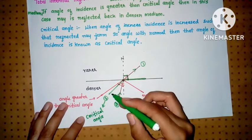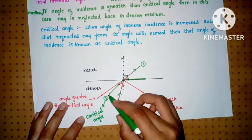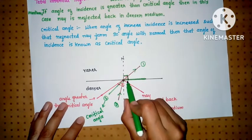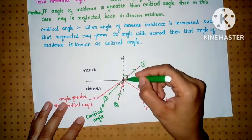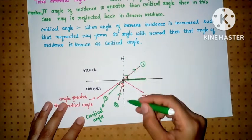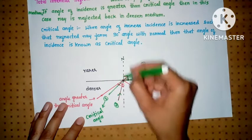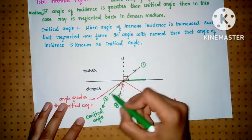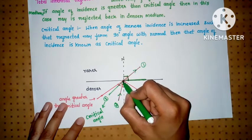Critical angle is defined as the angle of incidence for which the refracted ray forms a 90 degree angle with the normal. Normal means perpendicular to the line that separates the two mediums. So this angle of incidence